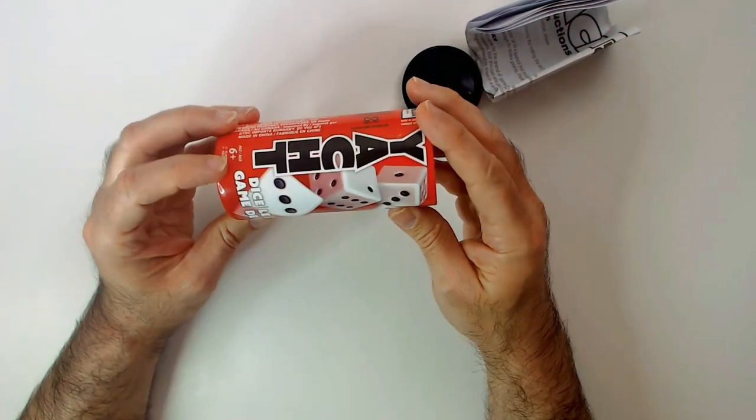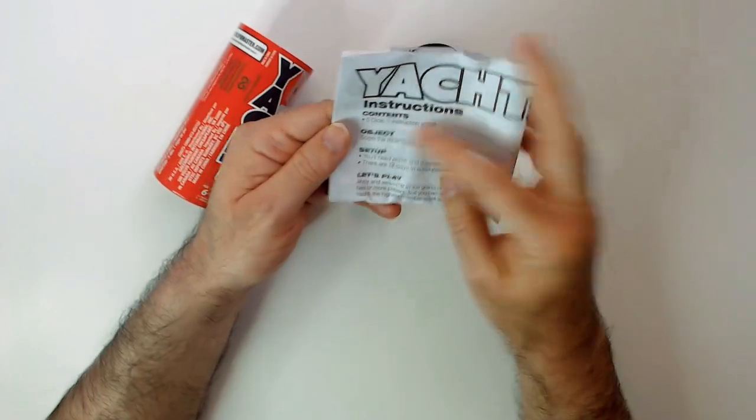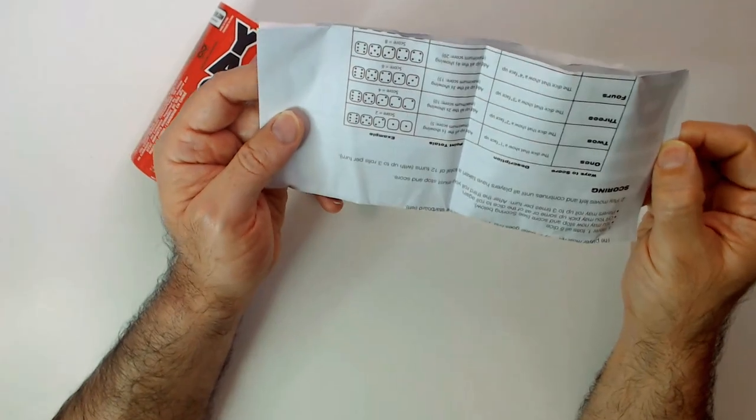Okay. So they kind of flew out there. Five dice. One instruction sheet. I'm pretty sure it's this. Yeah. Like Yahtzee.